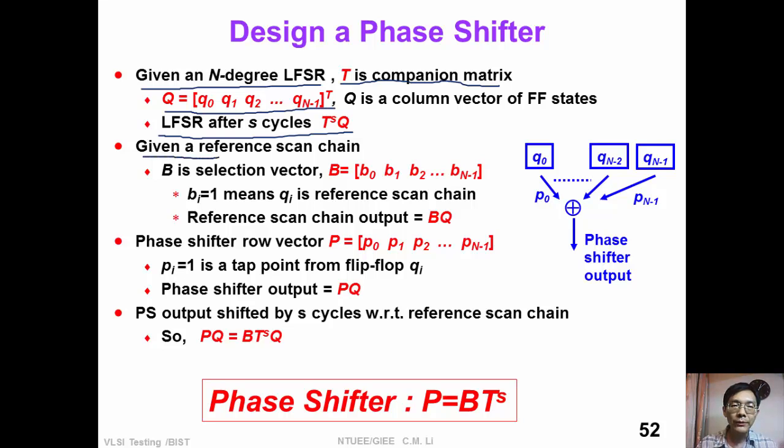We know that state after S cycles can be represented by T to the power of S times Q. Given a reference scan chain, B is a selection vector which is equal to B0, B1, B2, etc. Bi equals to 1 means Qi is the reference scan chain.